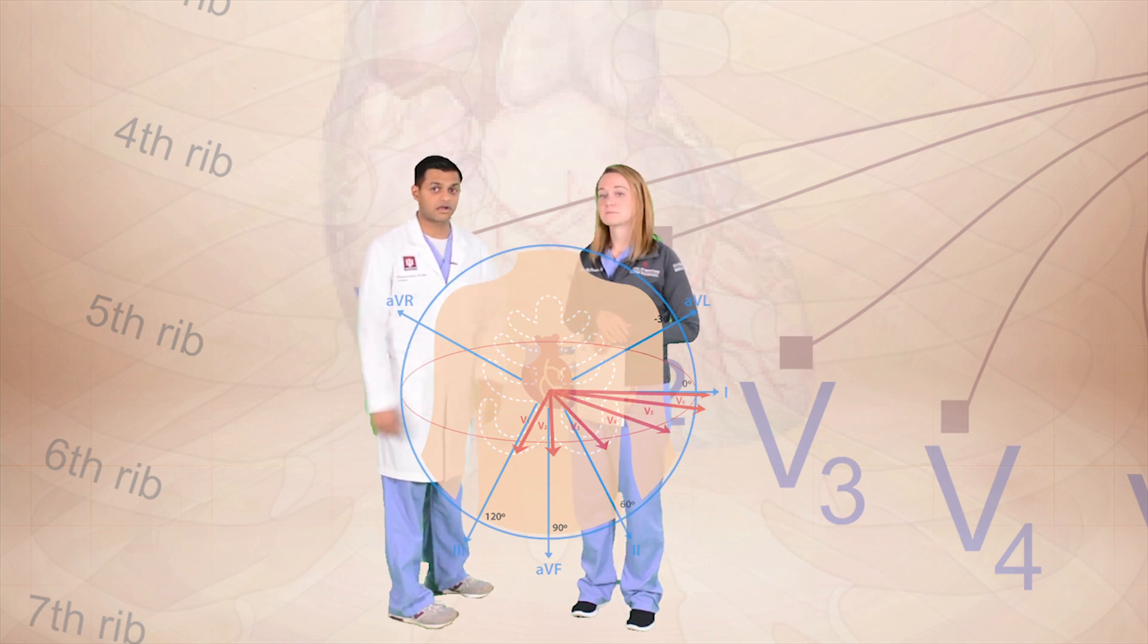And those 12 leads tell us different portions of the heart, the anterior, the posterior, and so forth. And this actually leads us to our next discussion.